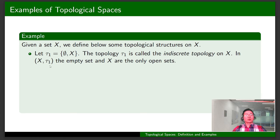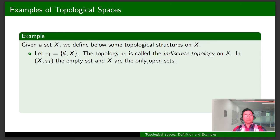In X with the indiscrete topology, the empty set and X are the only open sets. We can also verify that they are the only closed sets in this topological space.